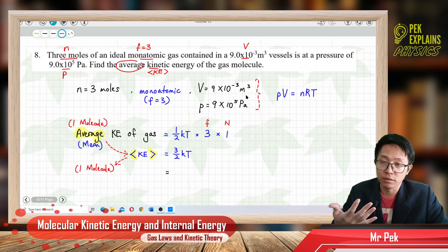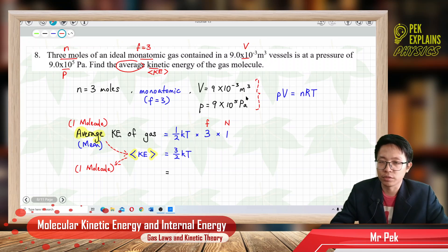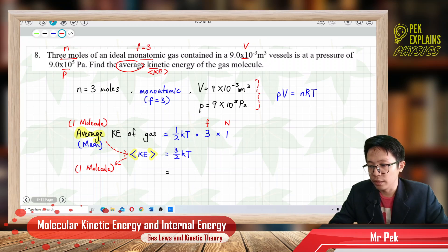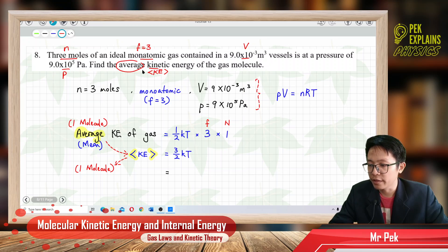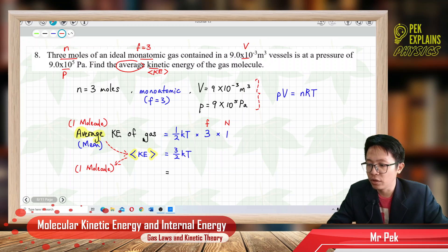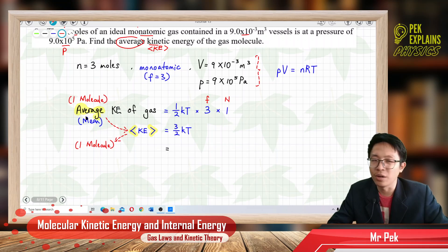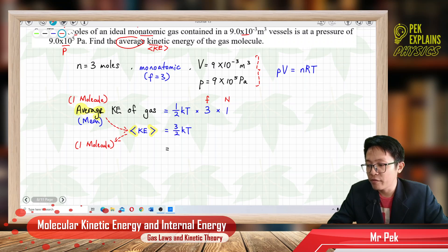Make sure everything is in SI units before you substitute into the equation. The volume and pressure are already in SI units — meter cube and Pascal. So, the question asks for average kinetic energy of the gas. The word 'average' here — let me explain what it refers to: how many gas molecules. The symbol of average is this one.